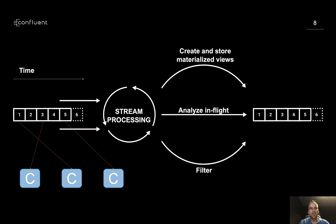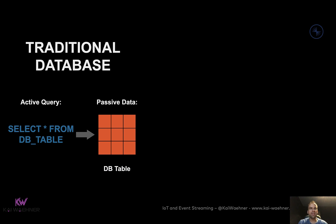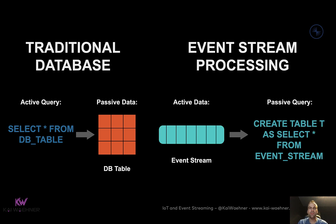Event streaming is not just one stream, but a correlation of different data events — real-time events combined with data from a database or table. A traditional database stores data at rest and you do an active query on it with HTTP, a web service, or SQL. This is always a somewhat too-late architecture. Event streaming makes the event stream the active data, so you continuously process it, as in the Lyft and Audi examples. But you can also do passive queries on top to build stateful applications and analytics — that's still possible in addition to continuous processing. This is the huge paradigm change between a traditional data store and event stream processing.